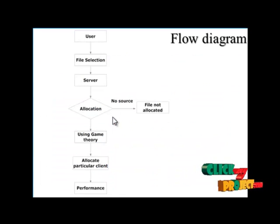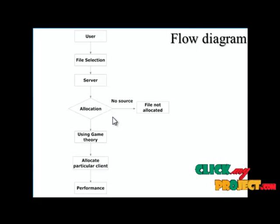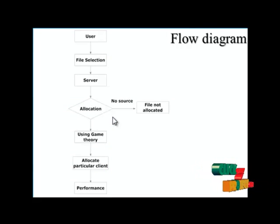In the system flow, user authentication is the first flow, file selection is the second flow, server allocation is the third flow using game theory. Finally, we can measure the performance.